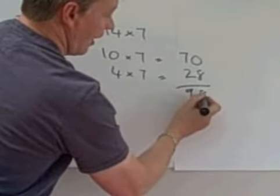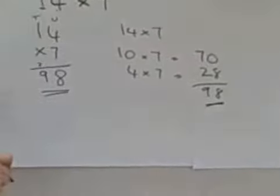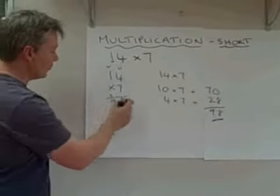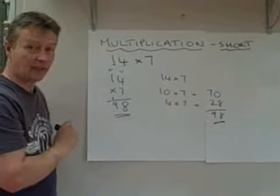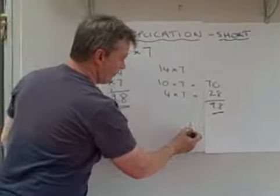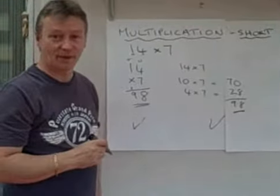Add the two together and the answer is 98. So those are two methods in which you can use, either this one where you've got a little bit of a carry or this one where you break it down. And both will give you the same answer.